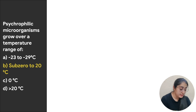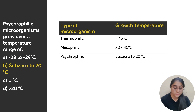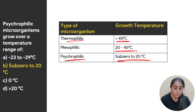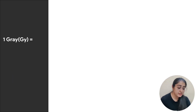Next: psychrophilic microorganisms grow over a temperature range of — options are minus 23 to minus 29, sub-zero to 20 degrees Celsius, 0 degrees Celsius, or less than 20 degrees Celsius. Thermophilic microorganisms grow above 45 degrees Celsius, mesophilic between 20 to 45, and psychrophilic from sub-zero to 20 degrees Celsius. The correct answer is sub-zero to 20 degrees Celsius.